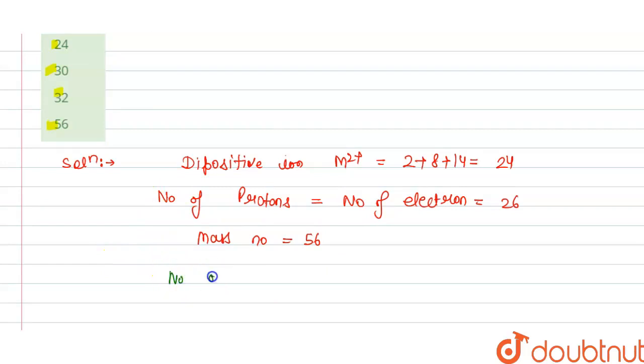plus number of neutrons. Number of neutrons, that we have to calculate. So this is 56, this is given to us.